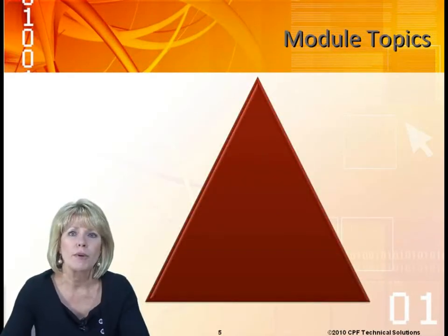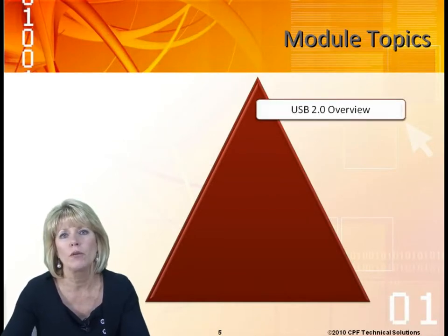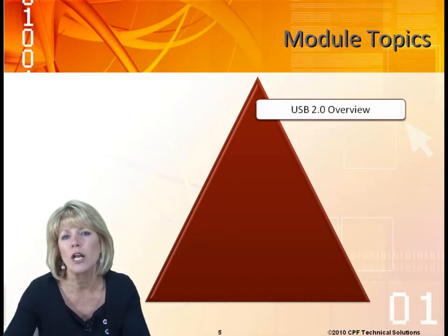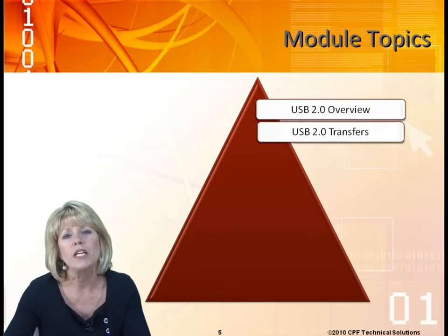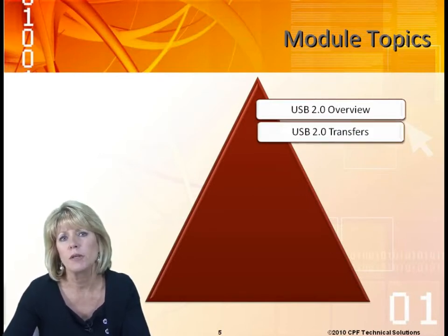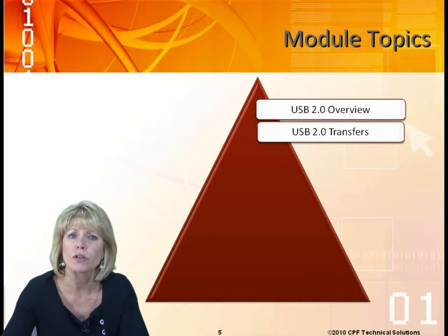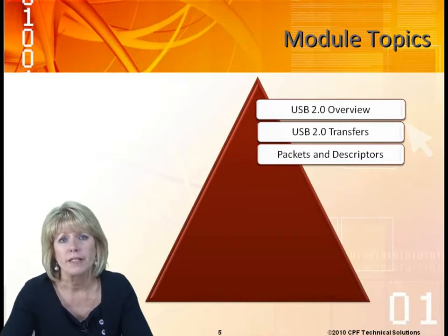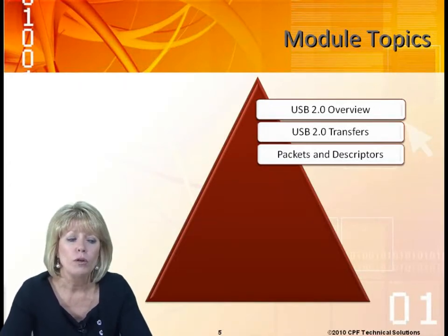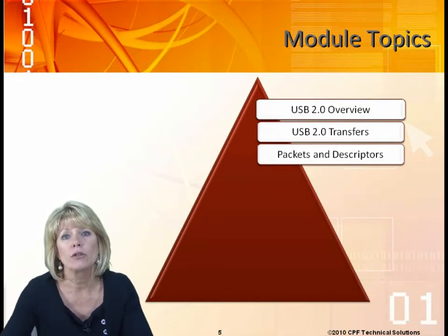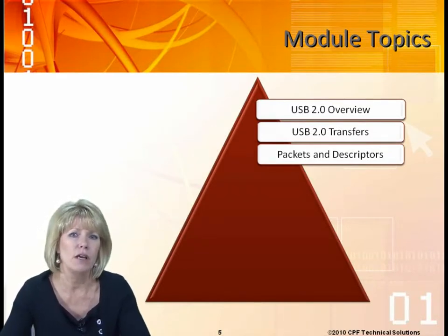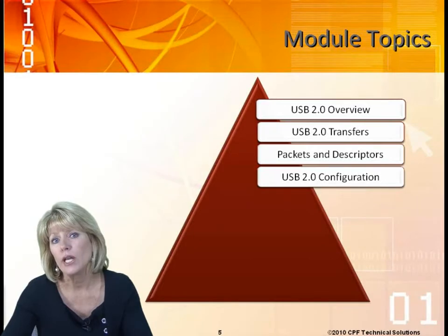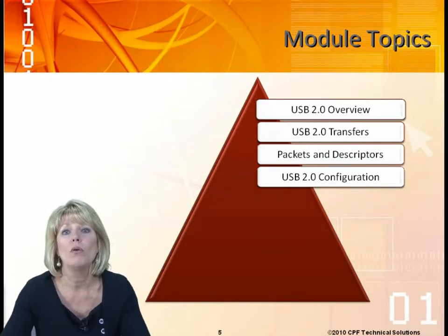Let's look at the module topics we're going to cover within USB 3.0. First, we want to cover an overview of USB 2.0 to refresh your memory on the nuts and bolts that make it up. We need to look at the transfer types in USB 2.0 because those same transfer types are required in USB 3.0. We'll look at packets and what makes up a packet, the different fields in a packet, and descriptors — understanding how a device explains itself in USB through device descriptors.